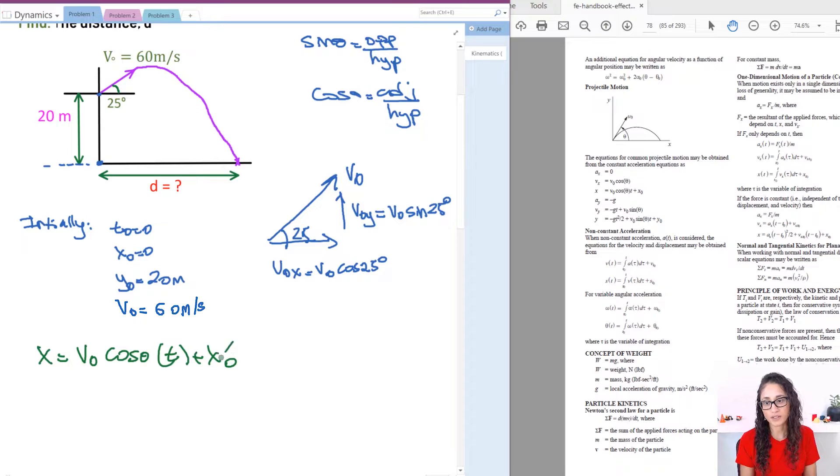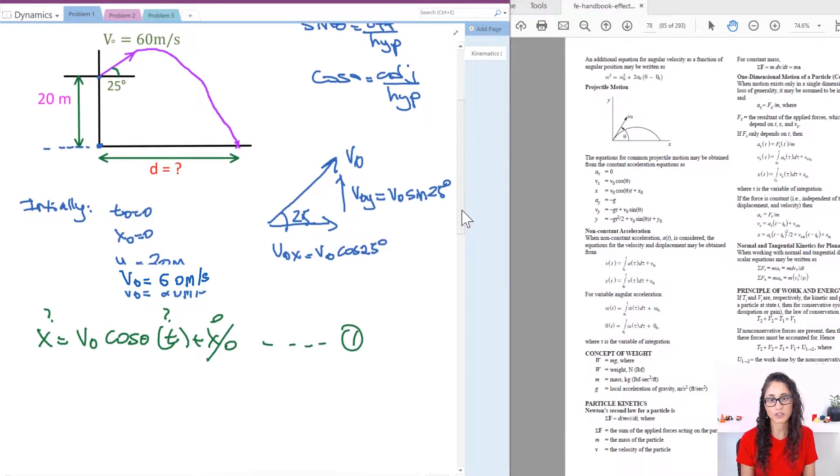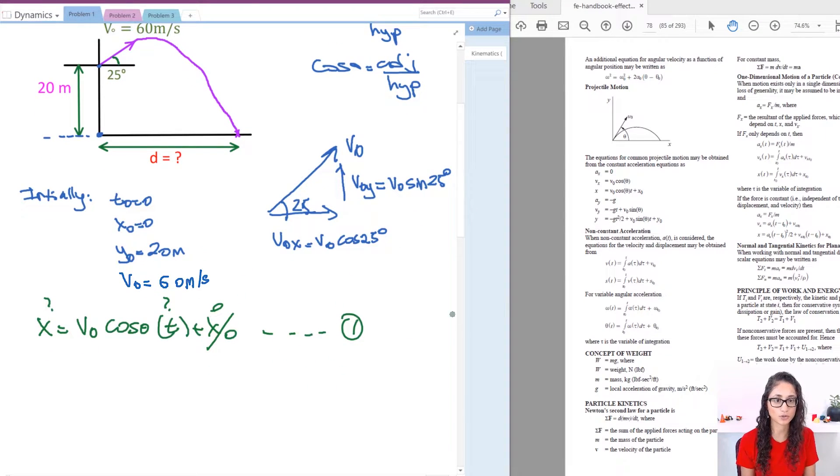So I have x is equal to v0 cosine theta times t plus x0. So we said that this is zero, v0 cosine theta we have that, we have v0, we have theta, but we don't have t and we don't have x. So we have two unknowns with one equation. We can't really solve it. So we need to find another equation that we can use.